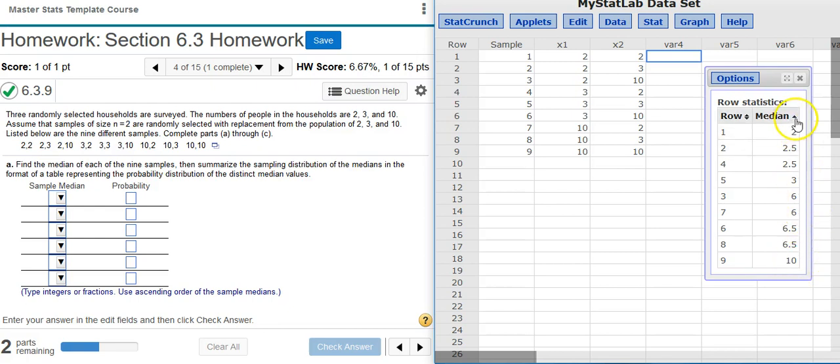If I click this again, it sorts it again in reverse order. We actually want this from smallest to largest, so I'm going to sort it in that order. Now I have everything I need to construct my probability table here in my answer fields.